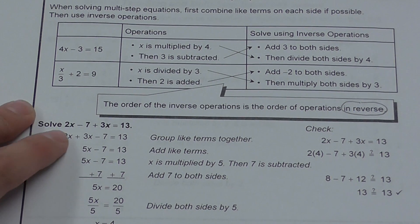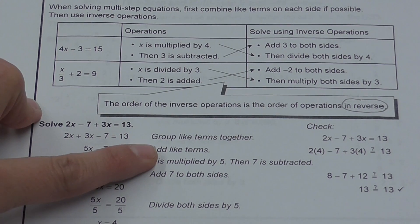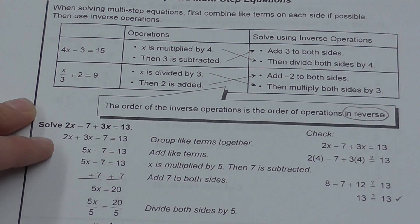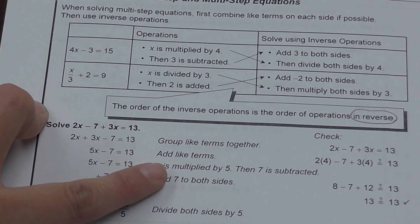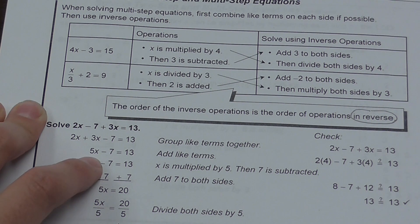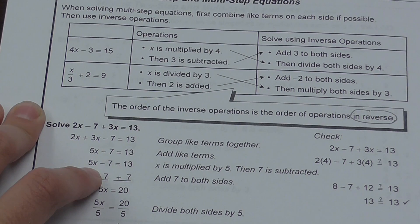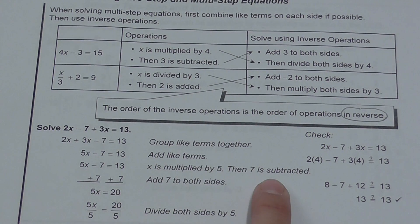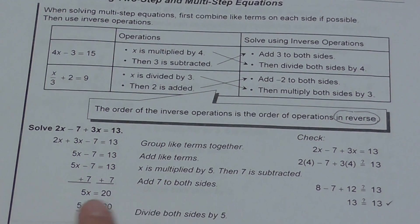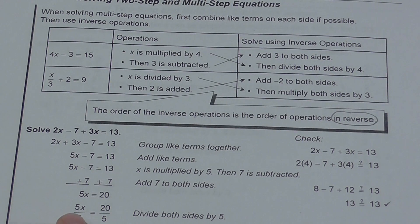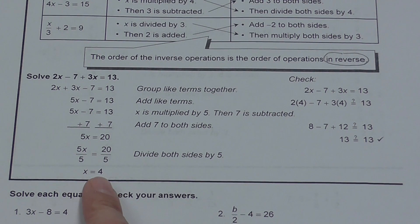Here's an example: 2x minus 7 plus 3x equals 13. First step — group like terms together, putting them next to each other. Then combine: 2x plus 3x is 5x. Now what is happening? x is being multiplied by 5, then 7 is being subtracted. So I have to deal with the 7 being subtracted first — add 7 to both sides. Then the 5 is still being multiplied by x, so divide both sides by 5, and I'm left with x equals 4.